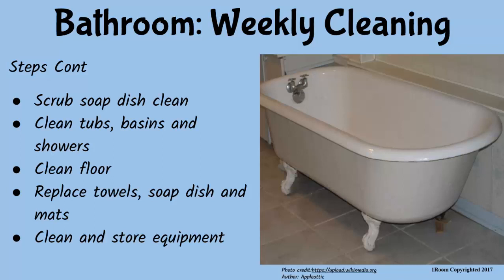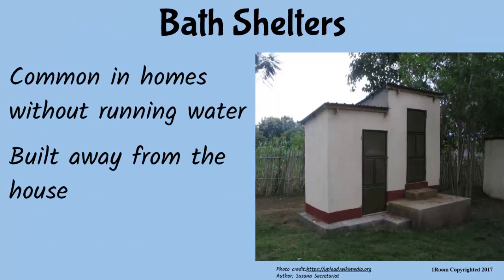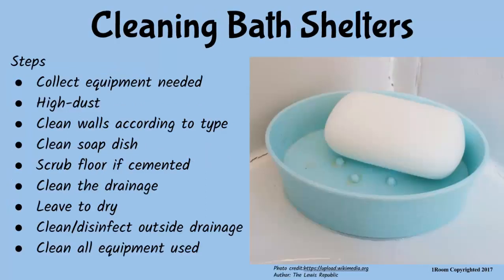'Yes, they are common in homes with no running water and are therefore built away from the main house, but close to the pit latrines.' 'How far away from the main house?' 'Far enough to keep off the bad smell.' When cleaning a bath shelter, collect the required equipment and materials, high dust, clean walls according to type, clean the soap dish, scrub the floor with a brush and warm soapy water if cemented, clean the drainage thoroughly, then rinse with hot then cold water, leave the room to dry, clean and disinfect the drainage outside, and finally clean the equipment used and store appropriately.